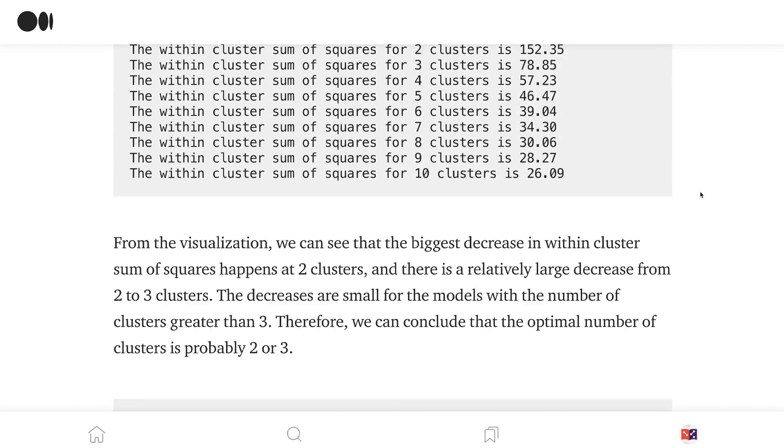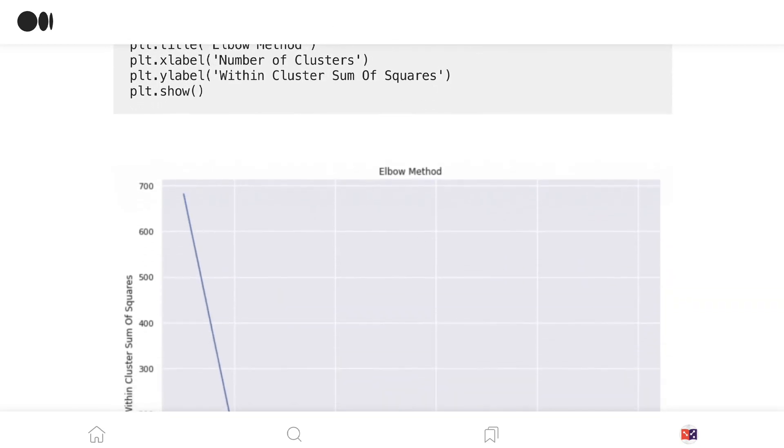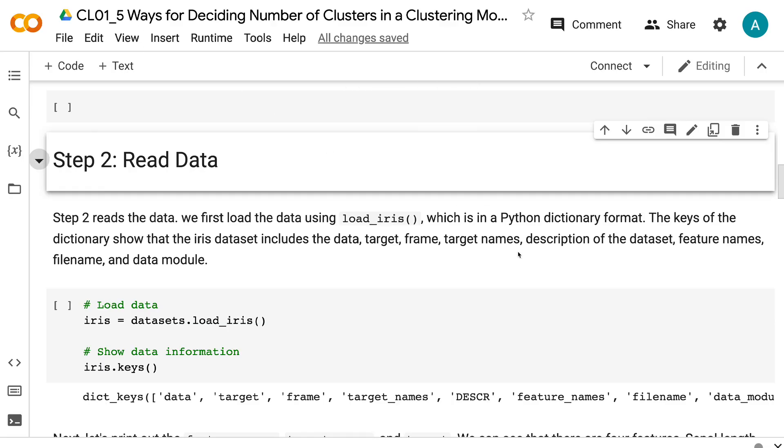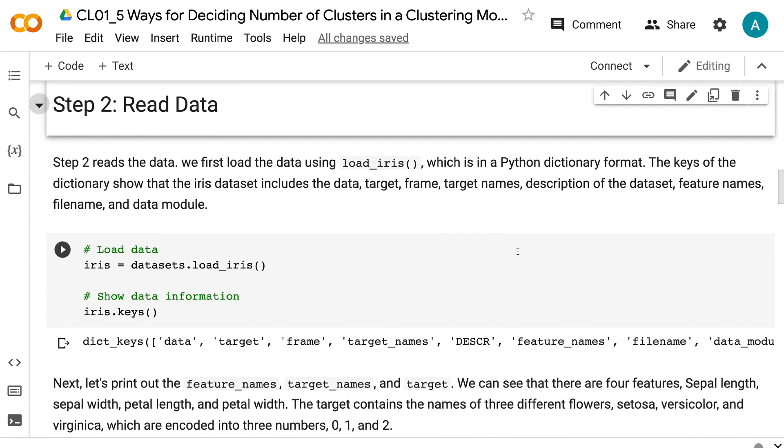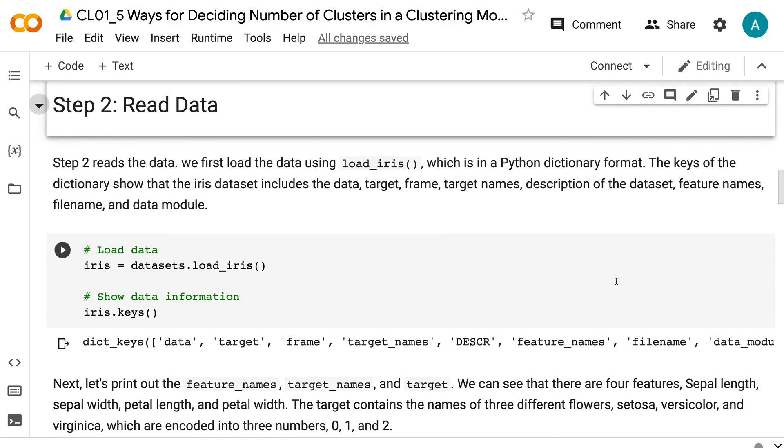Okay, let's continue. Step 2 reads the data. We first load the data using load_iris, which is in a Python dictionary format. The keys of the dictionary show that the iris dataset includes the data, target, frame, target names, description of the dataset, feature names, filename, and data module.